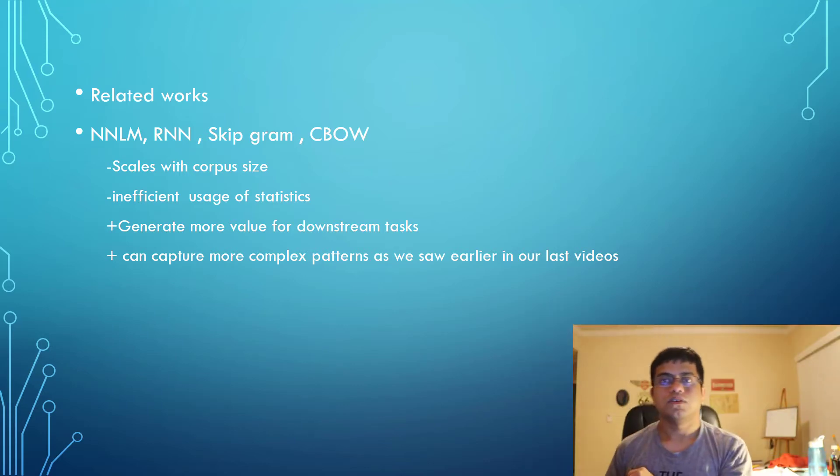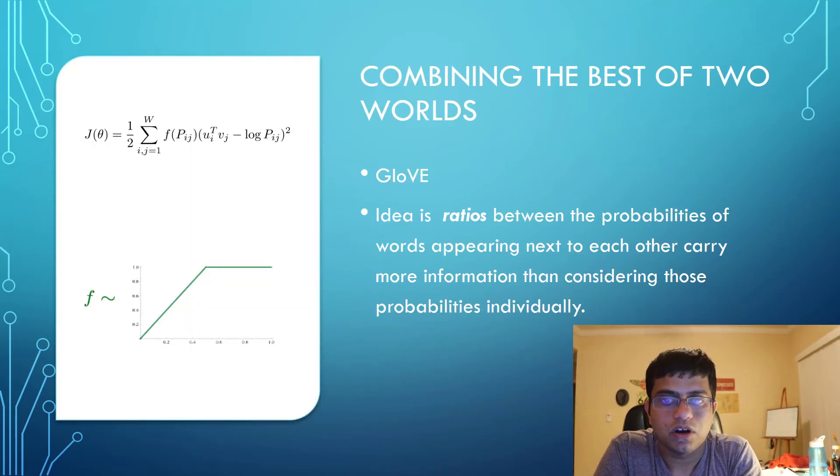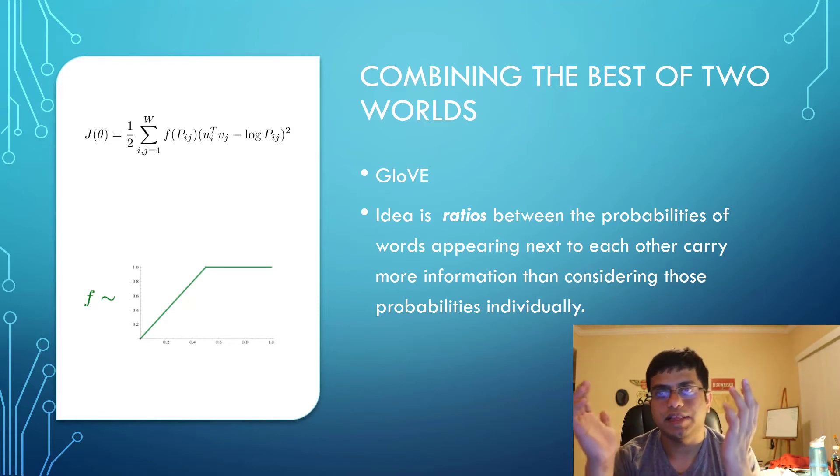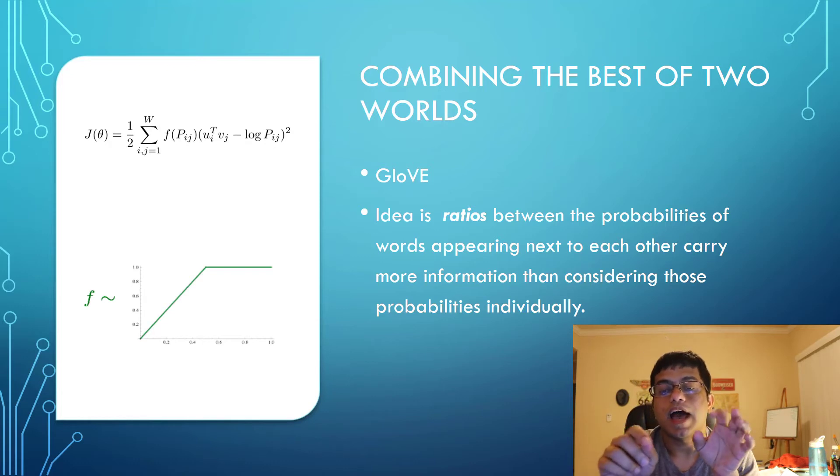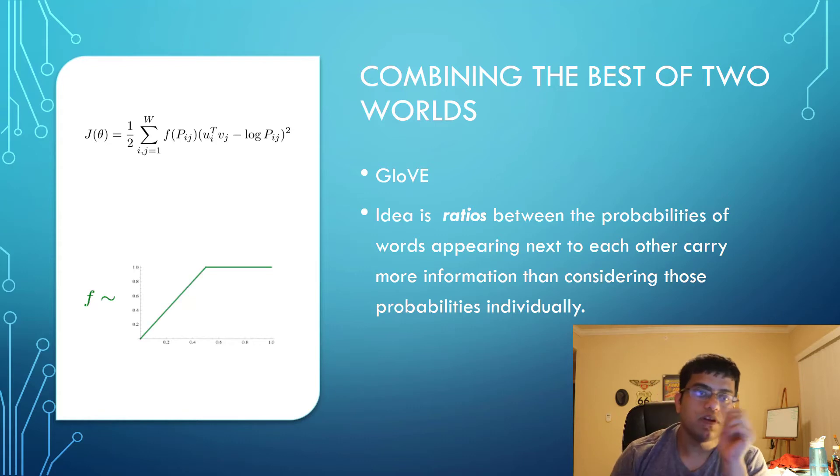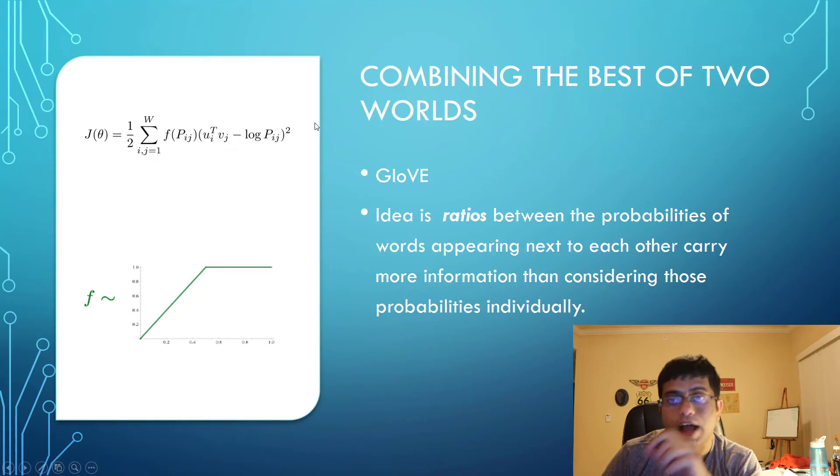We come to combining the best of two worlds: matrix factorization and word2vec models. The basic idea is the ratio between the probabilities of words appearing next to each other carries more information than considering the words individually. If you look at the cost function, theta represents all your parameters, then you have your word vectors u and v, and your co-occurrence matrix. You go over each pair of words and have a weight function to account for the disproportionate importance given to large count of words.